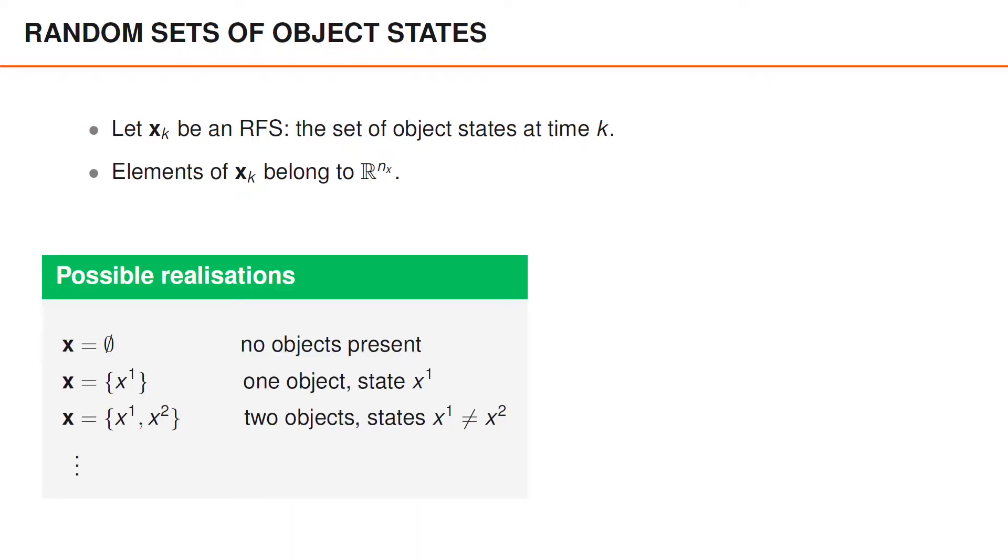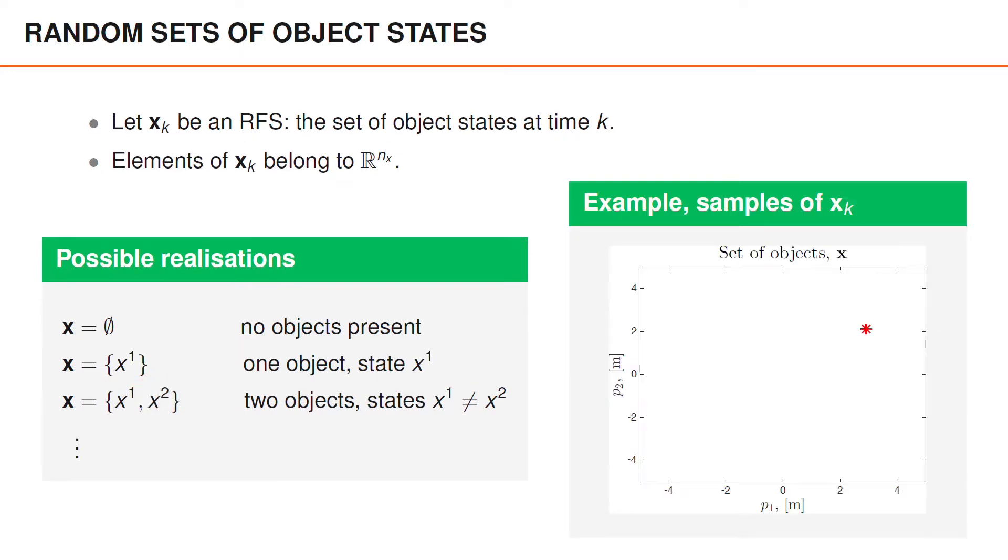Possible realizations of the RFS x is that it can be an empty set, which means that no objects are present. It can be a set with one vector x1, which means that there is one object present with state x1. It can be a set with two vectors x1 and x2, which means that there are two objects present with states x1 and x2, and so on.